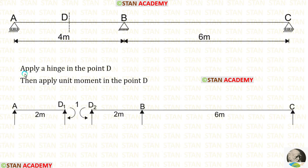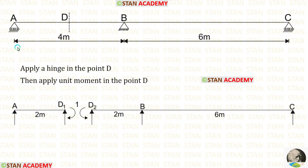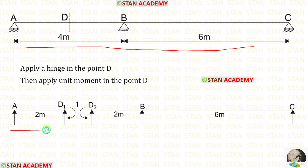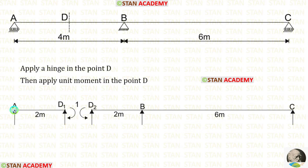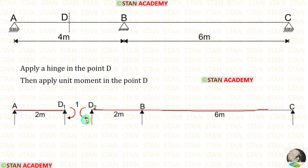Let us apply a hinge at point D, then apply a unit moment at point D. We then separate this continuous beam into two parts: the first part is AD1 and the second part is D2C. For the part AD1, the unit moment acts in the clockwise direction. For the part D2C, the unit moment acts in the anticlockwise direction.